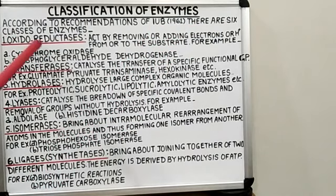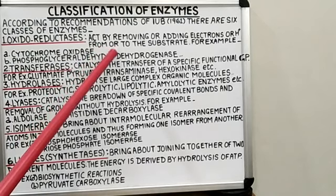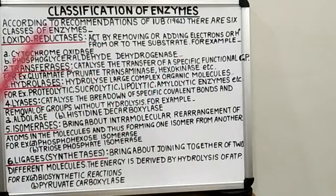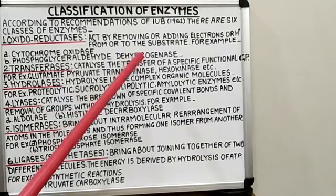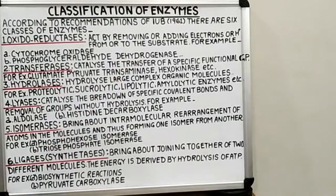The first one is oxidoreductases. These enzymes catalyze oxidation-reduction of their substrate and act by removing or adding electrons or protons from or to the substrate. For example, cytochrome oxidase oxidizes cytochromes. Phosphoglyceraldehyde dehydrogenase oxidizes phosphoglyceraldehyde by removing hydrogen ions.